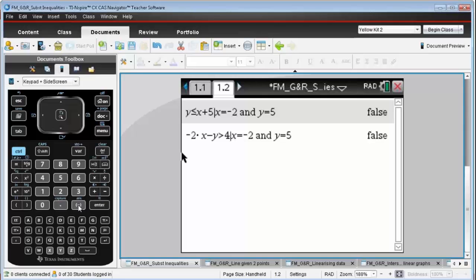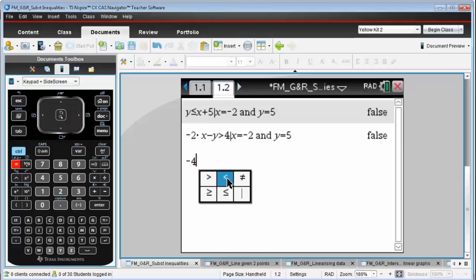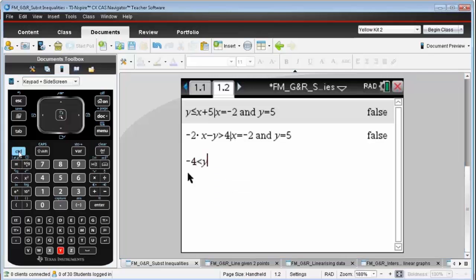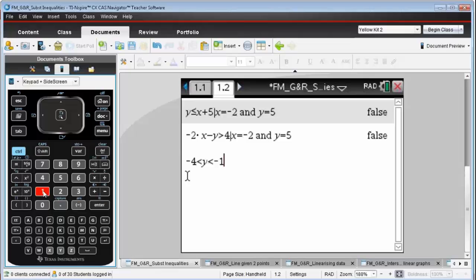So we go from negative 4 and then control equals sign is where you find all those inequality signs. So it's less than y. Once again, the less than sign, control equals gives me the less than sign. And I believe it was negative 1 that we are going to put in there, negative 1.